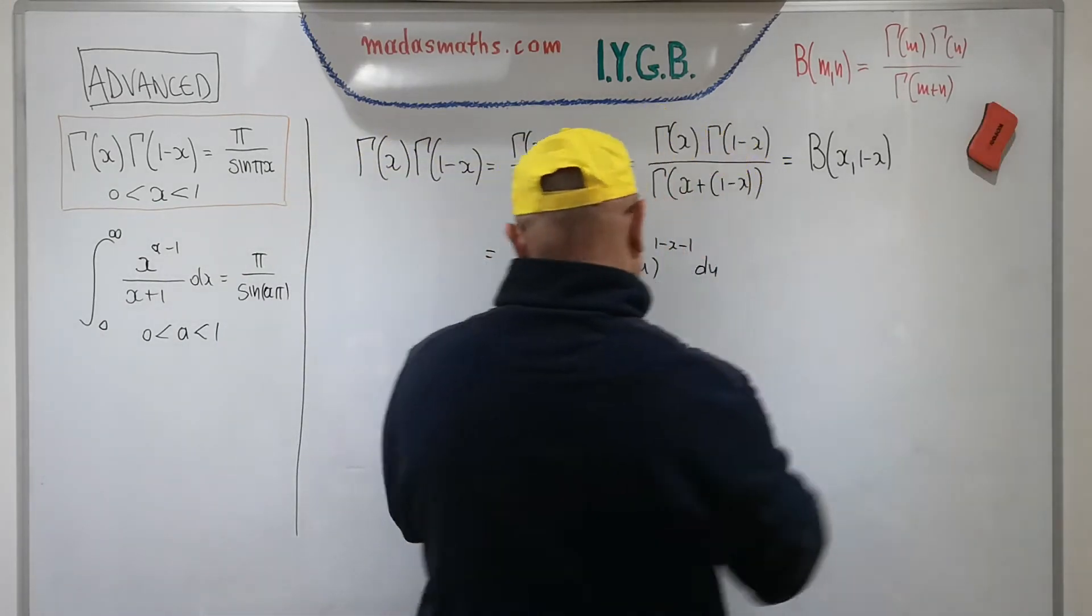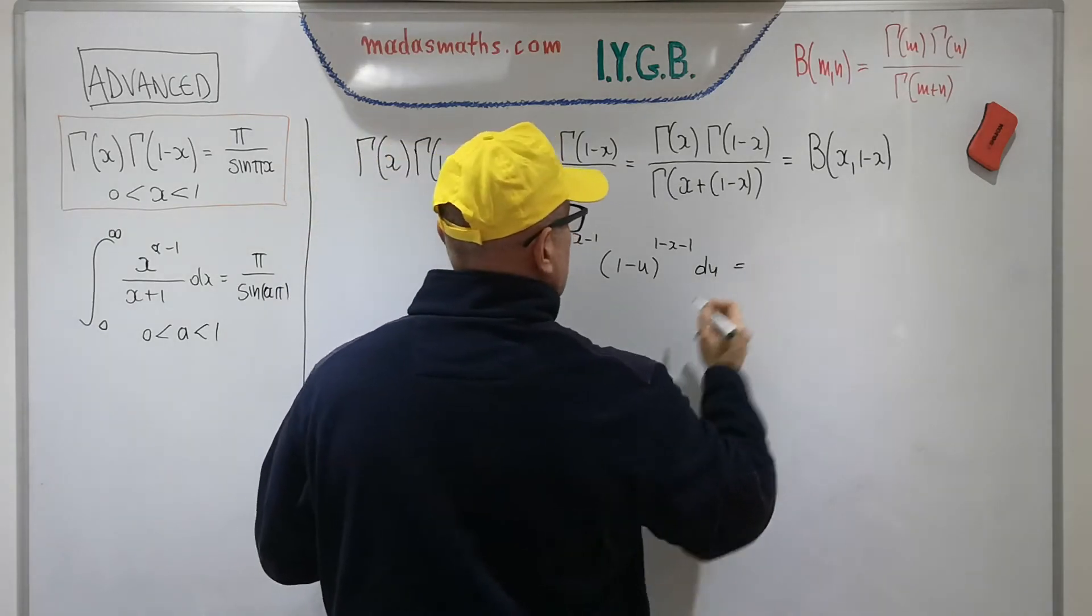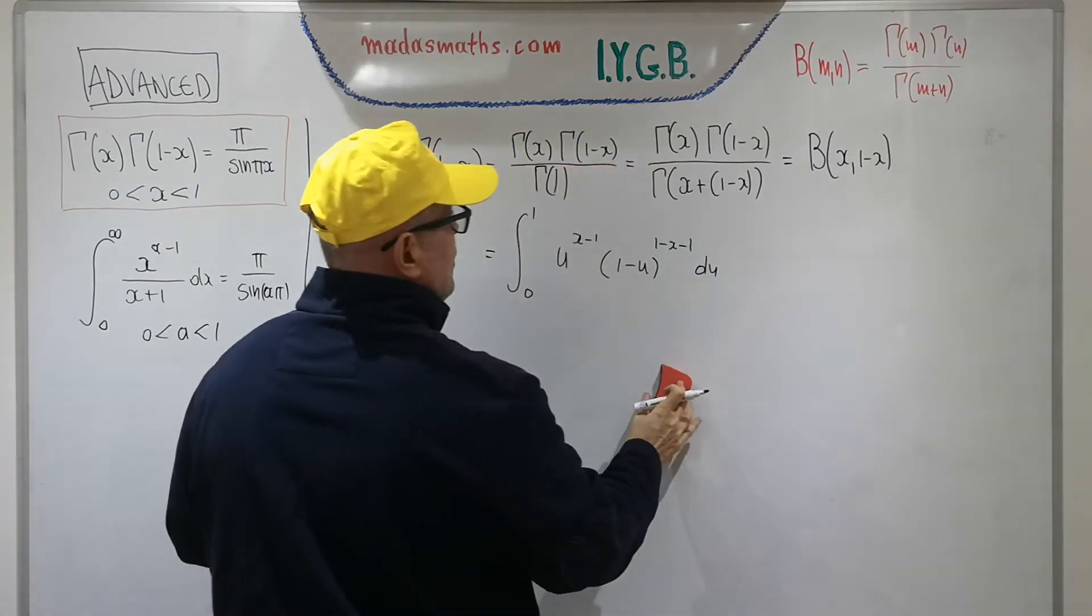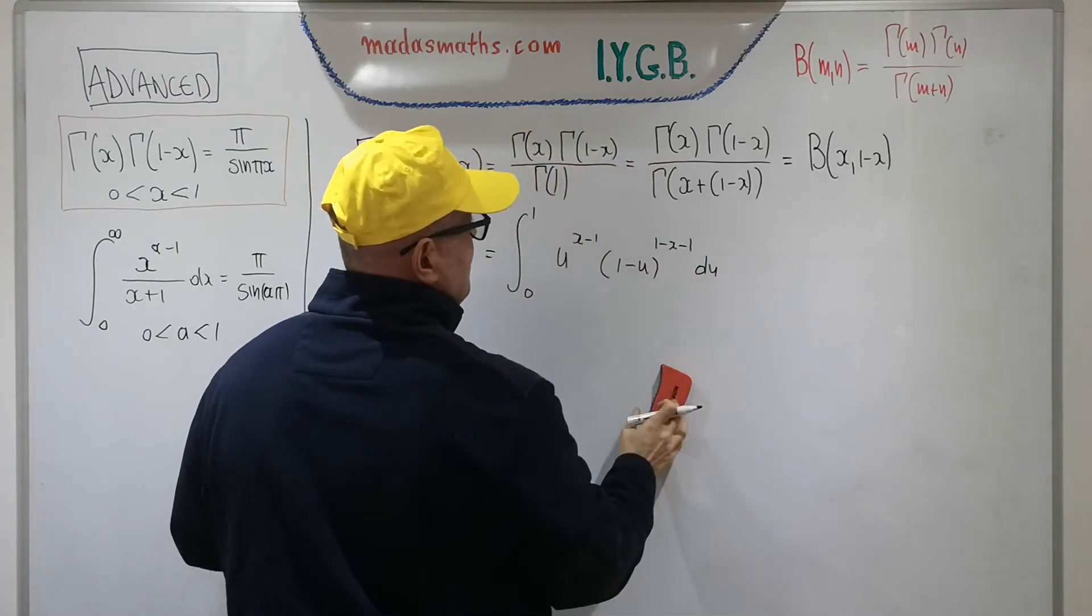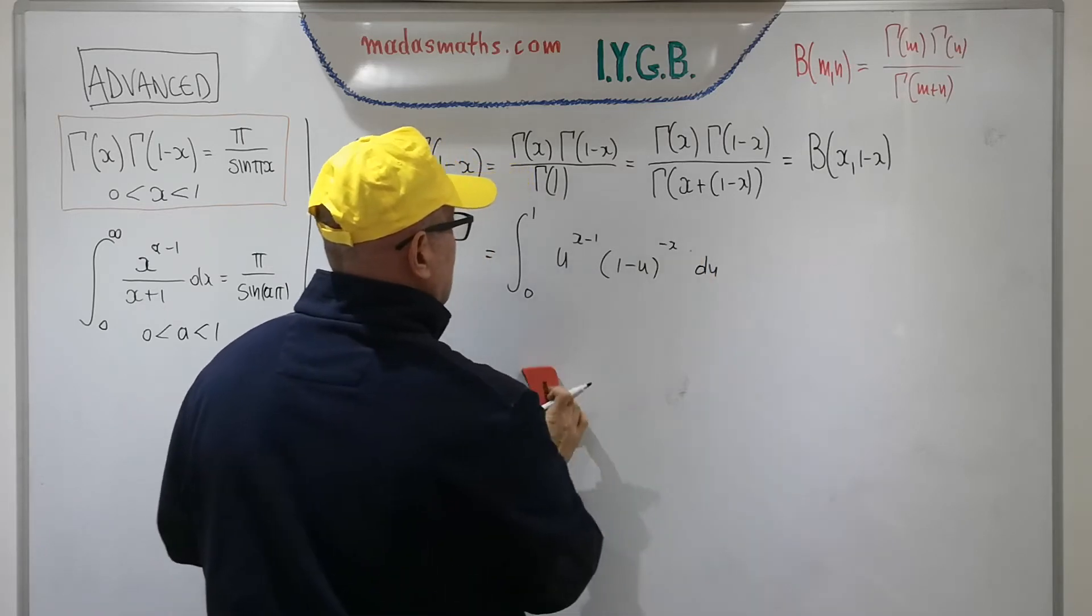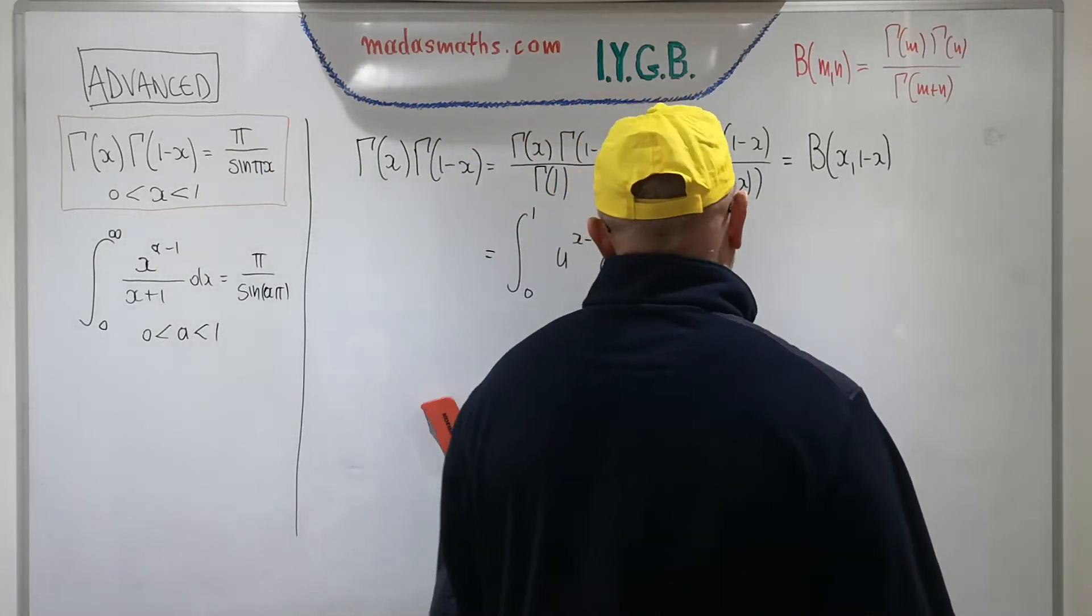This is now the same as that. A little bit of tidy, not much to do. So 1 minus 1 will cancel, I'm left with this. So now comes the next step. What can I do with that?